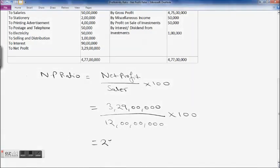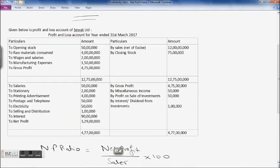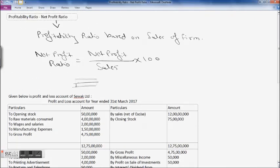This is how we calculate net profit ratio. For evaluation, we compare it with the industry standard and then accordingly evaluate how a particular firm or industry is performing. That was about the net profit ratio, thank you.